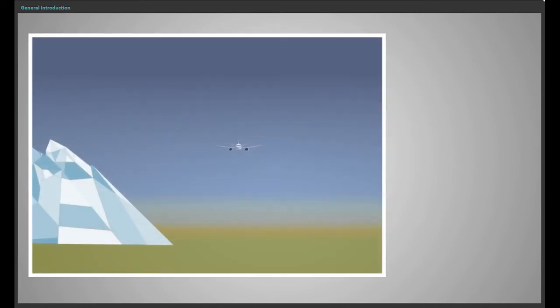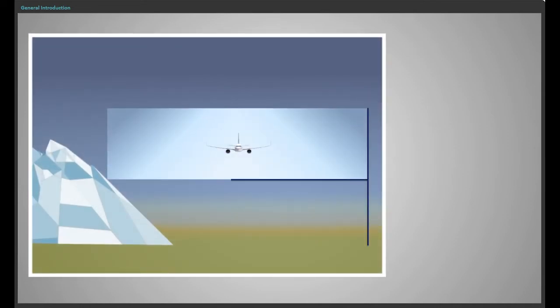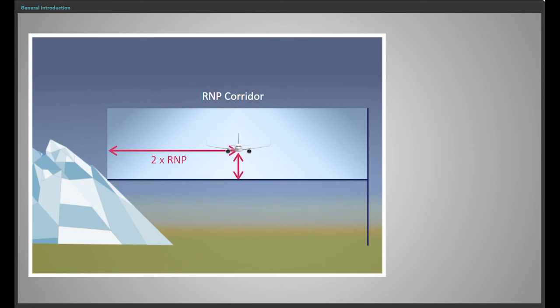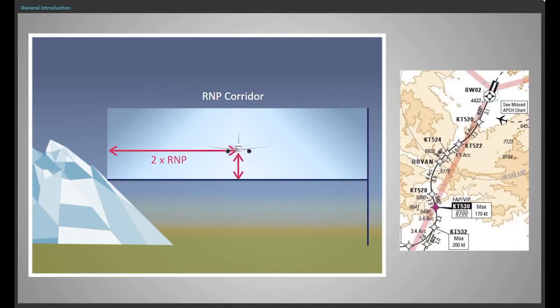An RNP AR procedure has one or more of the following characteristics: reduced obstacle protection of two times the RNP value without buffer on either side of the trajectory, and a curved flight path in final approach after the final approach point — a radius to fix leg.